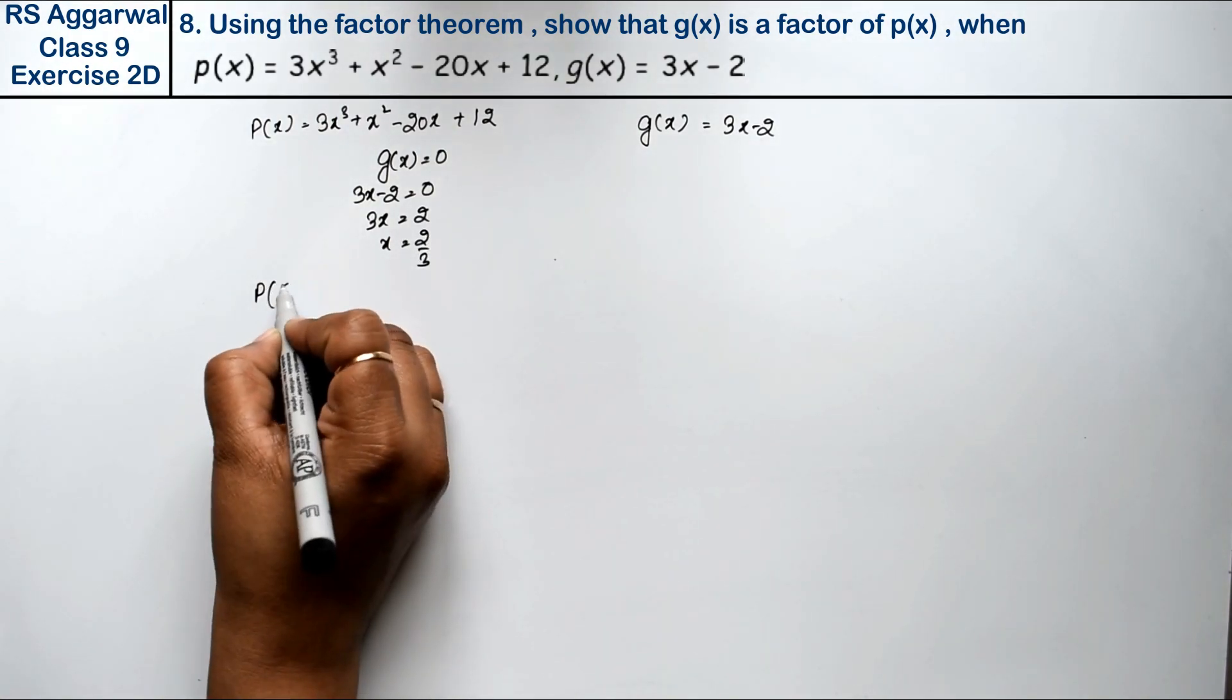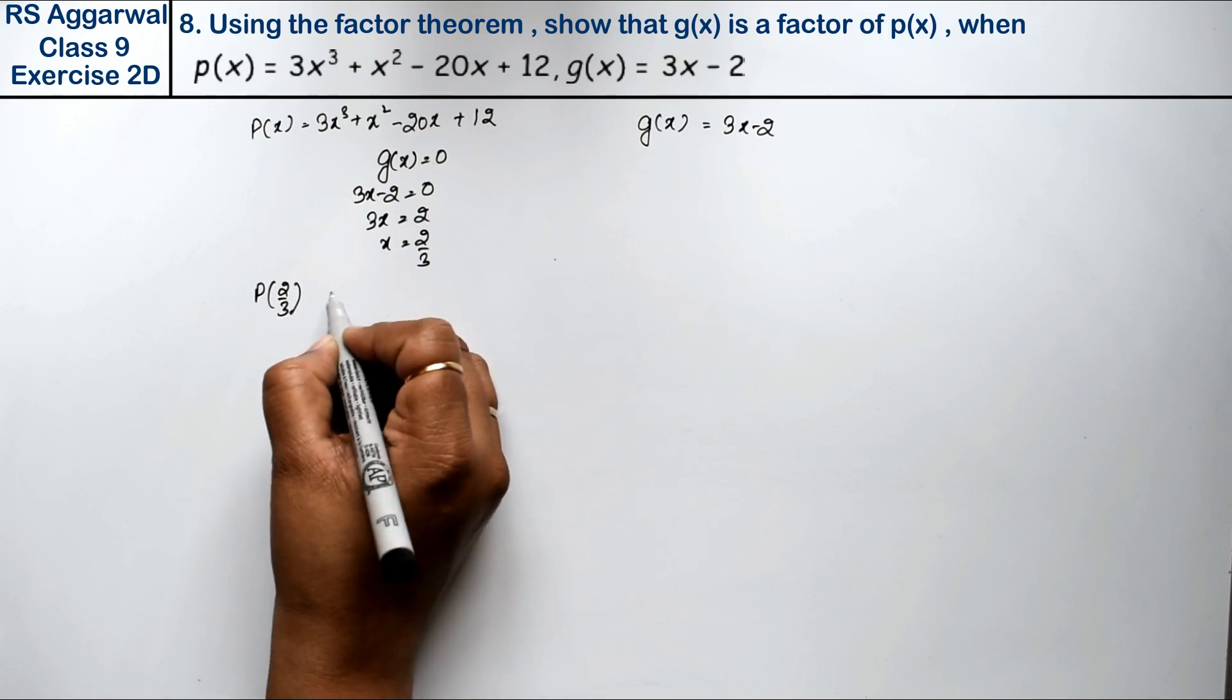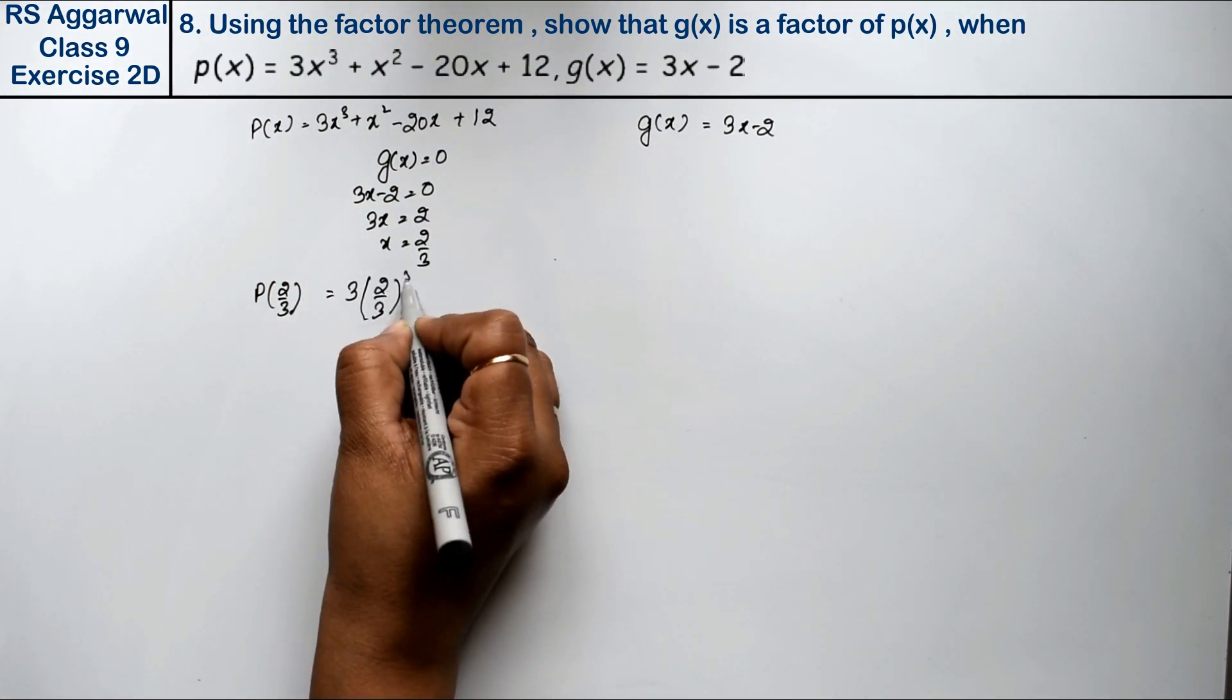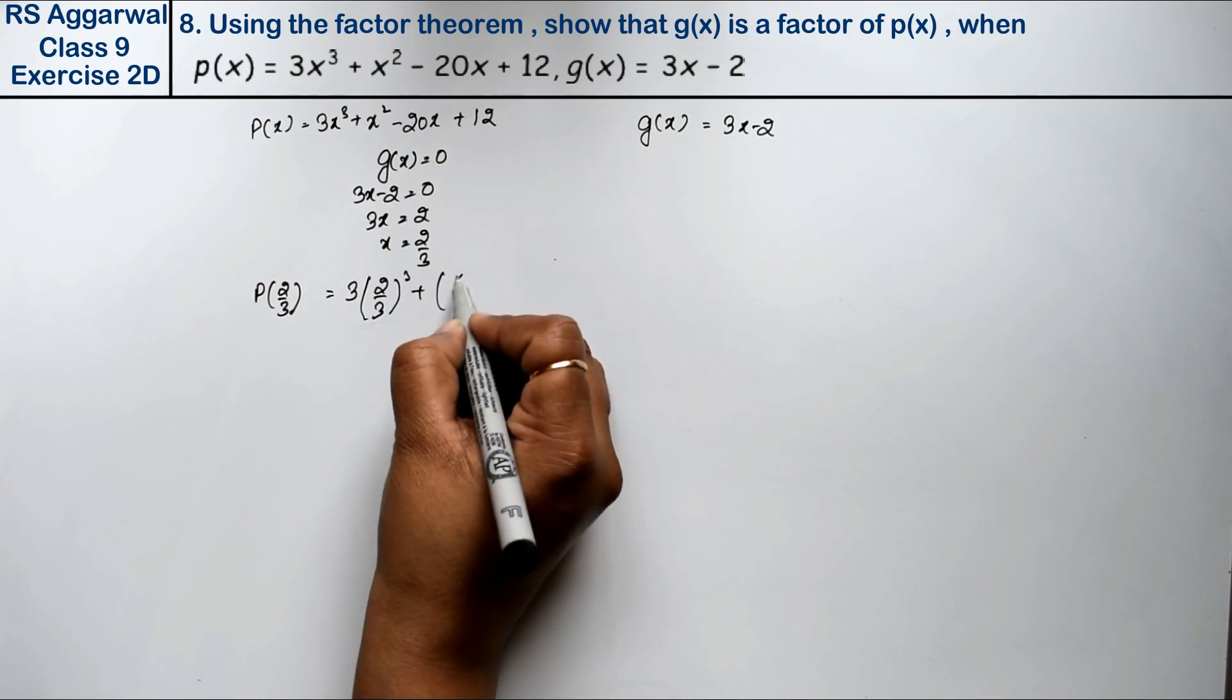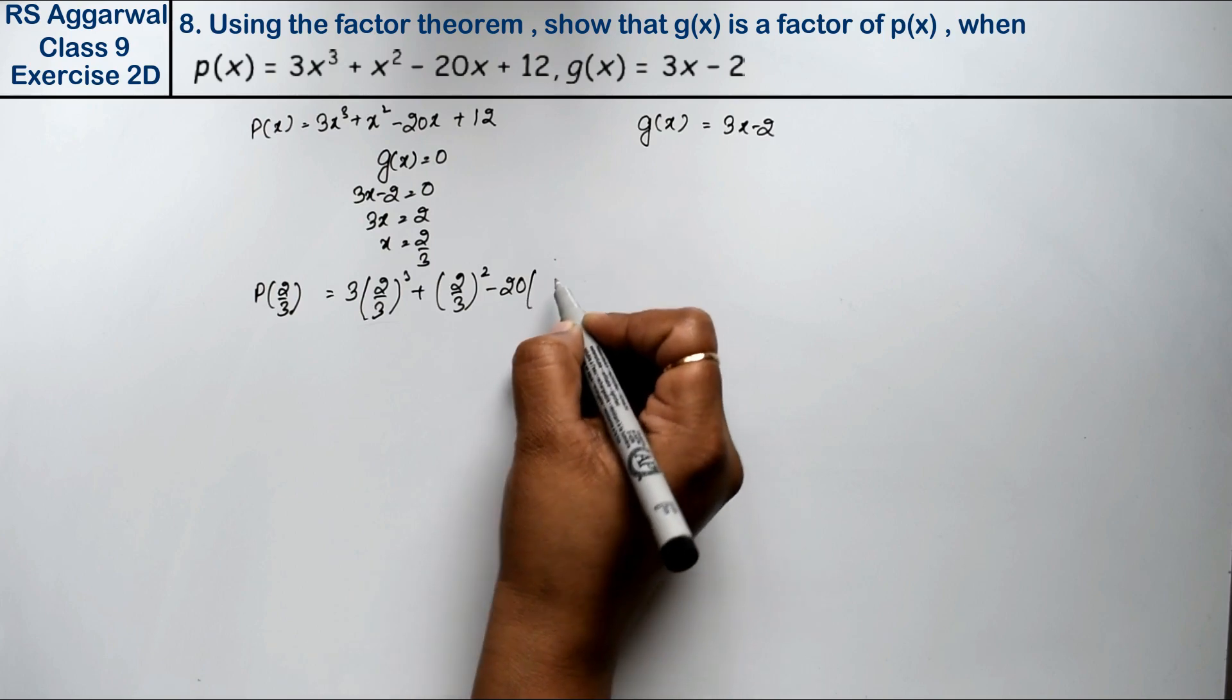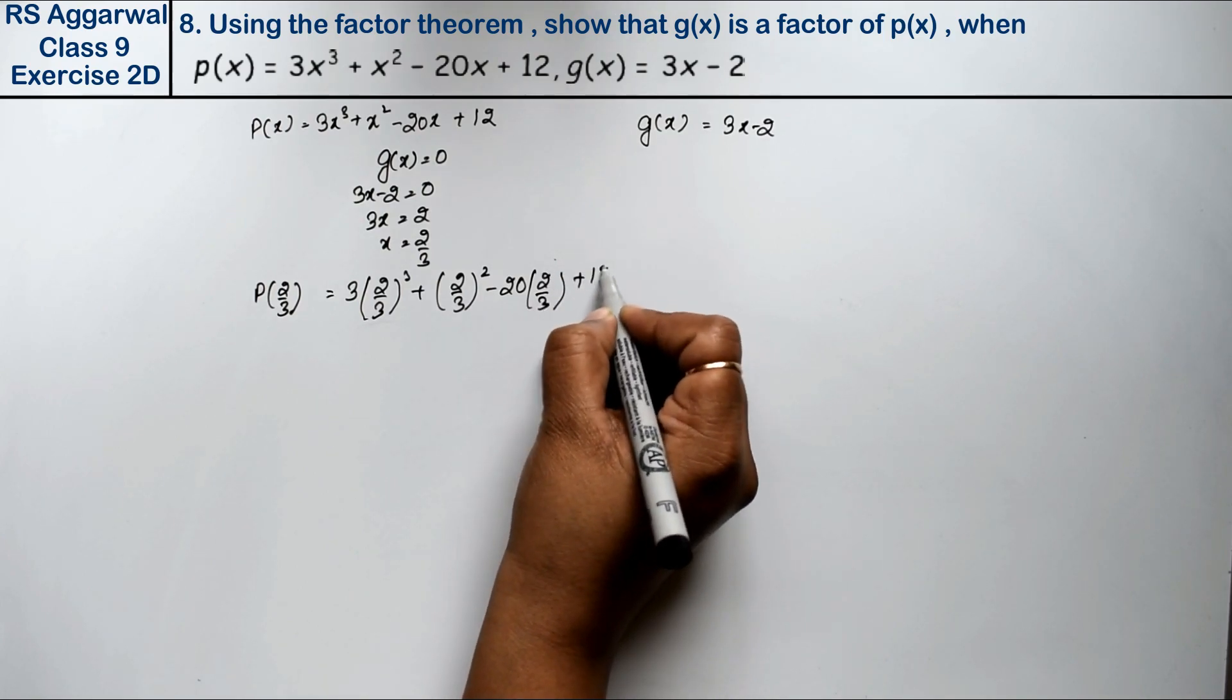Now p(2/3) = 3(2/3)³ + (2/3)² - 20(2/3) + 12.